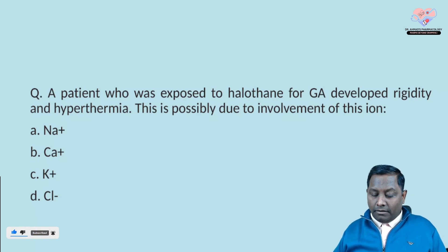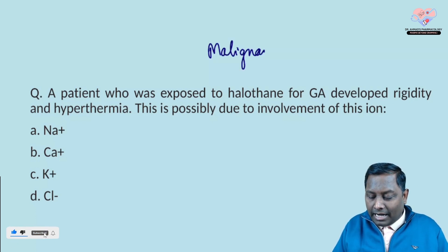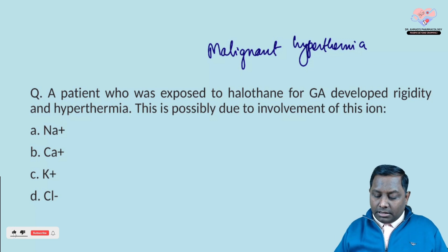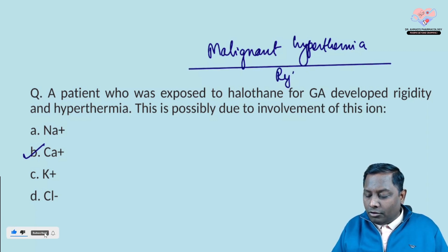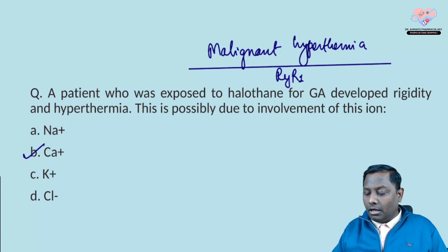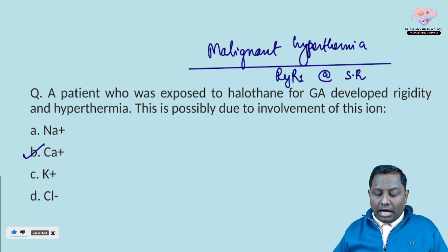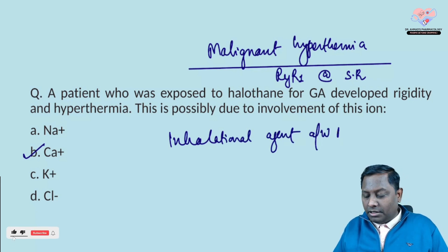The next question: a patient exposed to halothane for general anesthesia developed rigidity and hyperthermia. This is a case of malignant hyperthermia. This involves the ryanodine receptor present at the sarcoplasmic reticulum. Excessive calcium release leads to hyperthermia and the other symptoms mentioned.